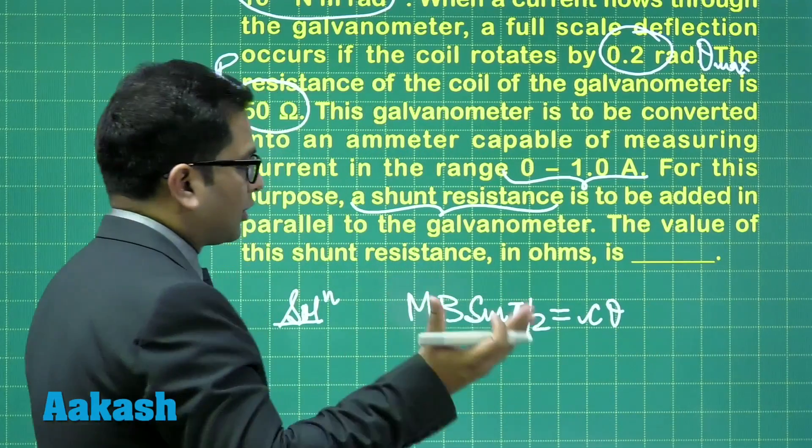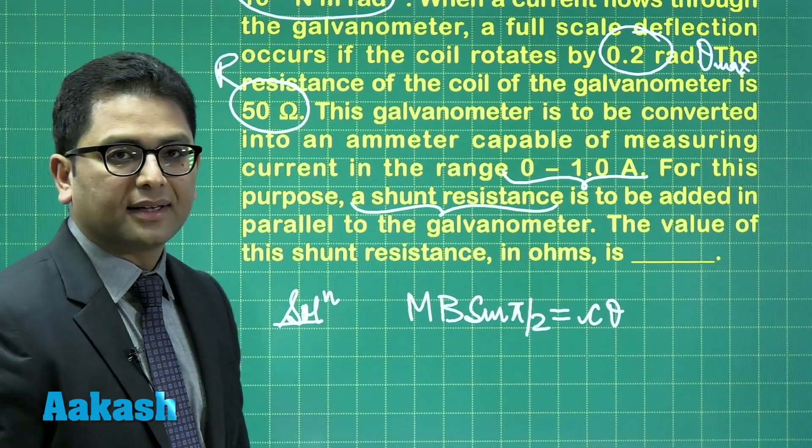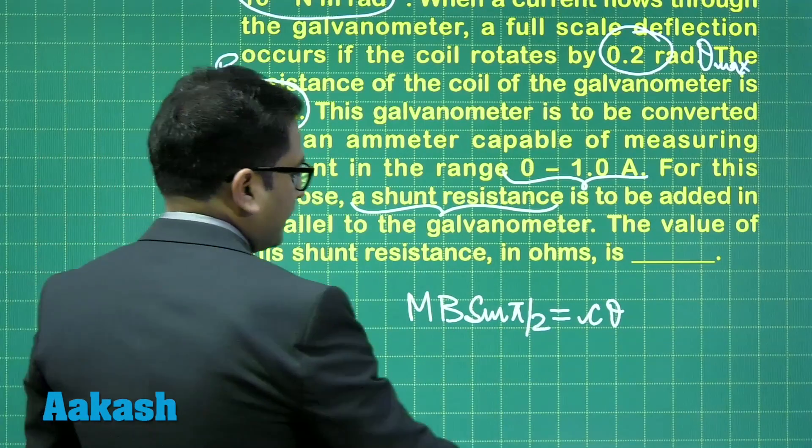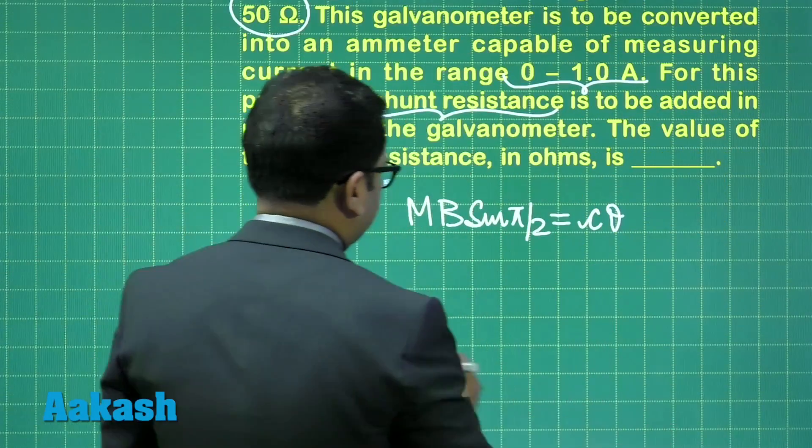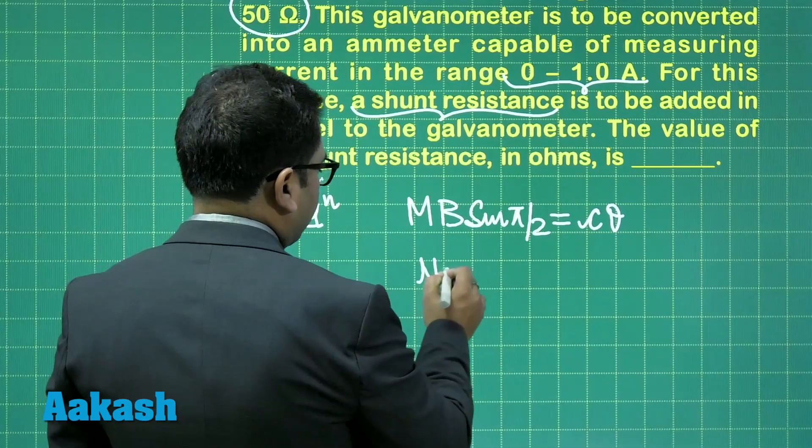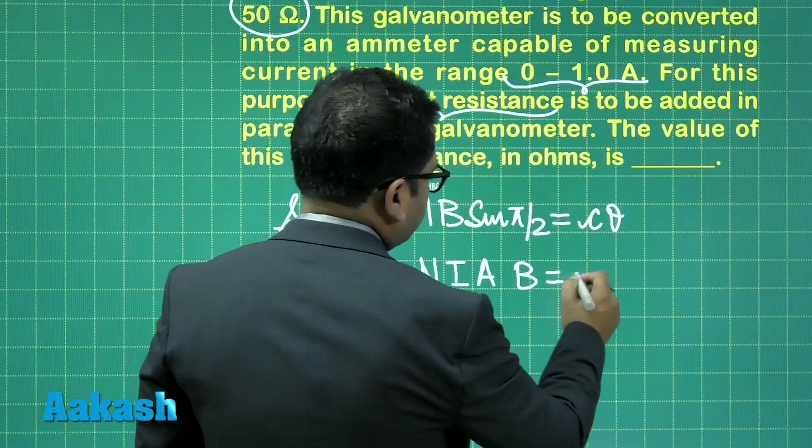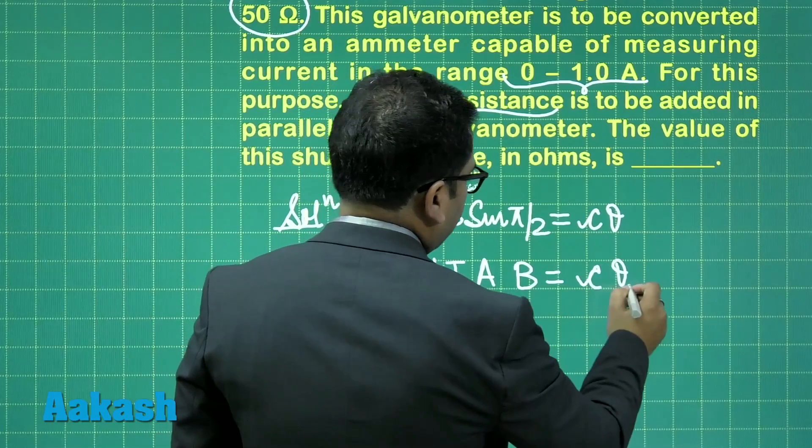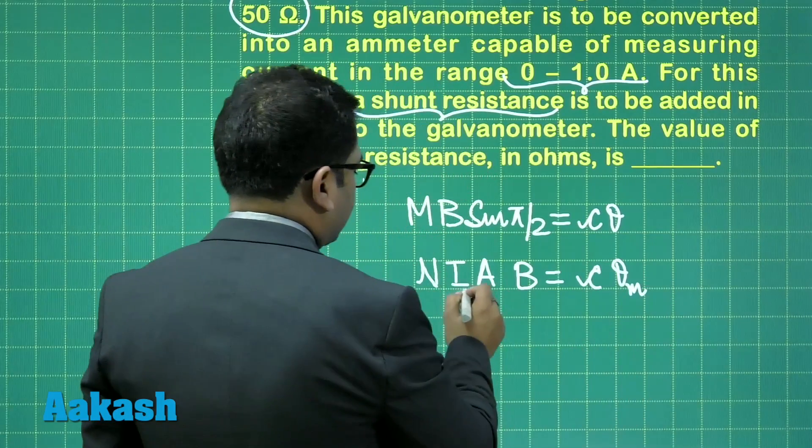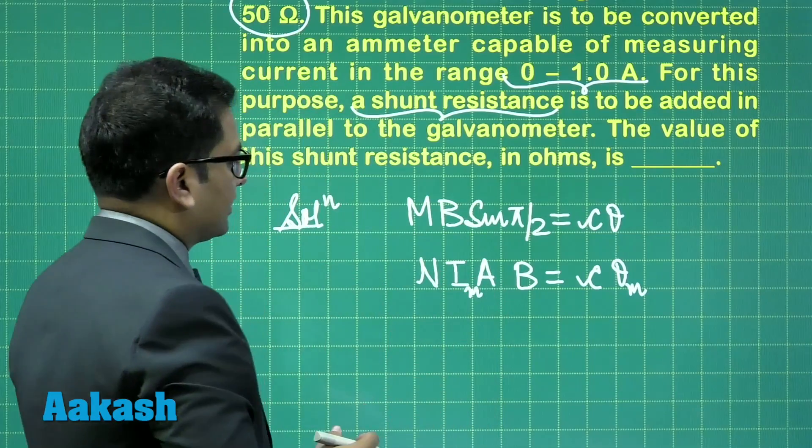And this magnetic moment has to be written as NIAB equals to C times theta. Now theta max is given, so that will be the current max, the range of the galvanometer. In fact, every data has been given.